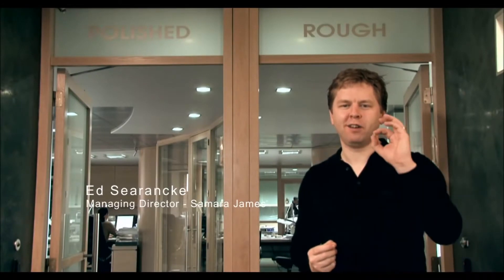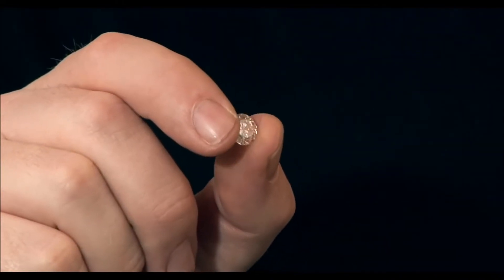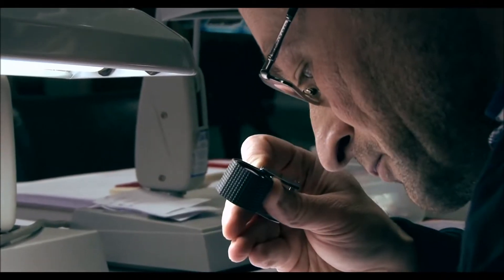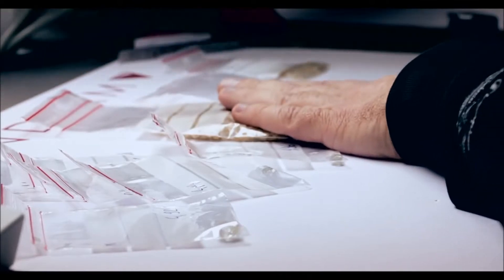Have you ever wondered how you go from a piece of rough to a perfectly polished diamond? We've come to Antwerp to have a look at the process in more detail. First of all, the diamonds need to be sorted into parcels.